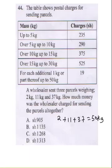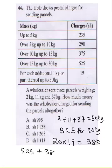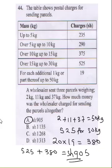The table shows charges up to 50 kg, with a rate for each additional 1 kg beyond 30 kg. The charge for the first 30 kg is 525 shillings. For the remaining 20 kg, at 19 shillings each, that is 20 times 19 equals 380 shillings. Adding 525 plus 380 gives a total of 905 shillings.